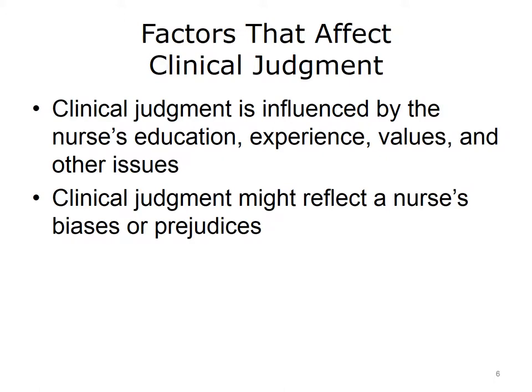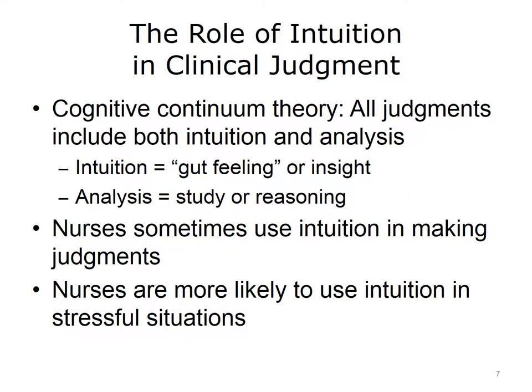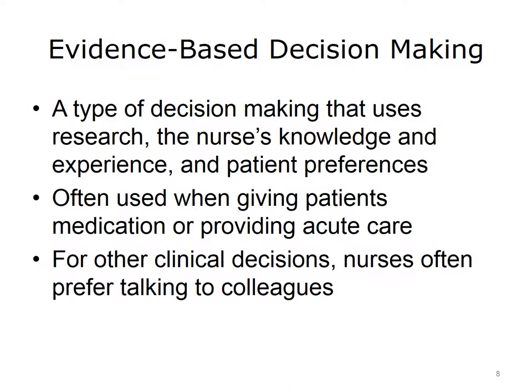Unfortunately, a nurse might also draw on personal biases or prejudices when making decisions about patient care. The cognitive continuum theory states that all judgments are based on a combination of both intuition and analysis. Intuition means a gut feeling or insight that is not based on facts. Analysis in health care means careful reasoning about all patient information to determine the nature of the illness and what the next steps should be. Nurses do sometimes use intuition to make decisions about patient care. Research shows that nurses' decisions tend to be more intuitive when they are under time pressure and dealing with situations that are complicated and unclear. Conversely, nurses' decisions tend to be more analytical when dealing with situations that are structured and clear. Even if a nurse uses more intuition than analysis to make a clinical decision, he or she needs to be able to explain the reason for the decision.